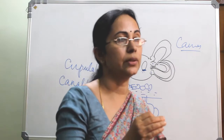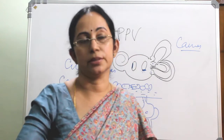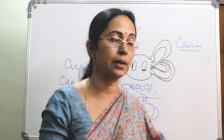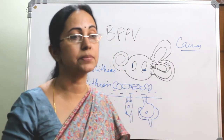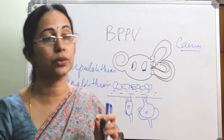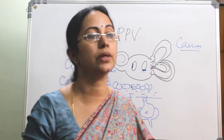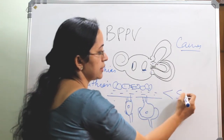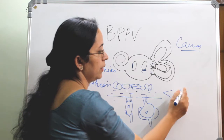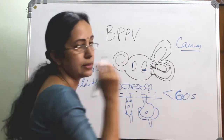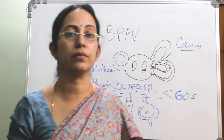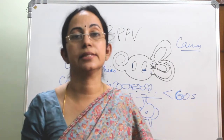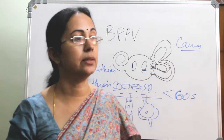Some patients will tell you it is a long duration, but if you take a clear history, you will find that the complaint is a subjective feeling of rotation and is not true vertigo. The true vertigo of BPPV will last for less than 60 seconds — less than one minute. There will also be a subjective feeling of imbalance or light-headedness, especially on turning the head.